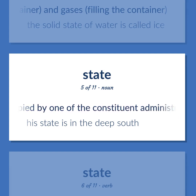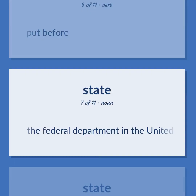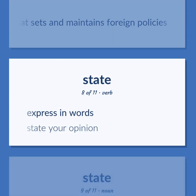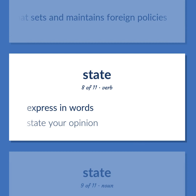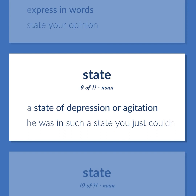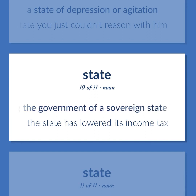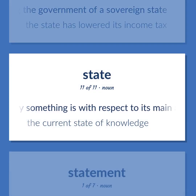State: the territory occupied by one of the constituent administrative districts of a nation — 'His state is in the deep south.' Put before. The federal department in the United States that sets and maintains foreign policies. Express in words — 'State your opinion.' A state of depression or agitation — 'He was in such a state you just couldn't reason with him.' The group of people comprising the government of a sovereign state — 'The state has lowered its income tax.' The way something is with respect to its main attributes — 'The current state of knowledge.'